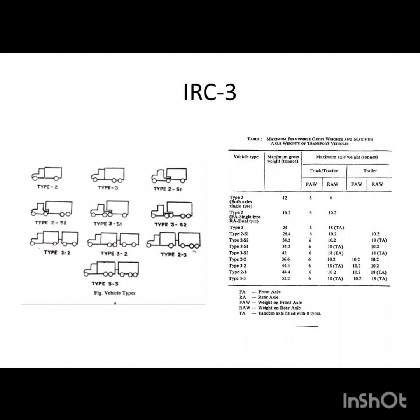There is Type 3S1 and 3S2, based upon various combinations of wheels. The maximum axle weight is given in ISC 3, and these are for heavy vehicles. For example, if we see only Type 2, the maximum gross weight allowed is 12 tons — 6 tons for the front axle and 6 tons for the rear axle.